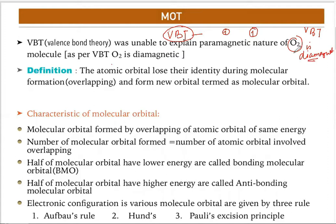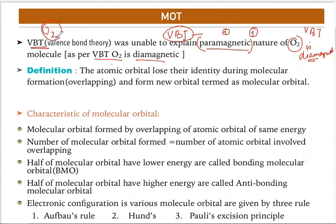But practically, oxygen is paramagnetic. This is the key problem: VBT cannot explain the paramagnetic nature of oxygen. VBT says oxygen is diamagnetic, whereas experimentally oxygen is paramagnetic. So a new theory had to be developed to deal with the magnetic nature of molecules. That drawback led to the development of Molecular Orbital Theory.